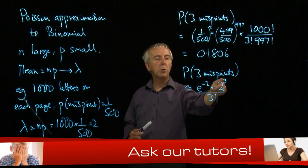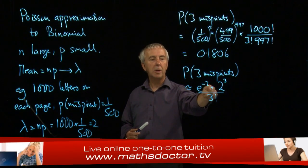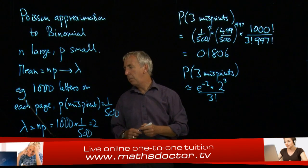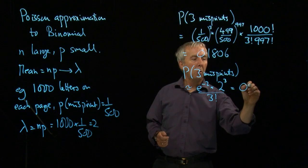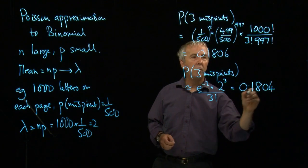Most of it we can do in our heads. 2 cubed is 8, 3 factorial is 6. We just need to look up the e to the minus 2. And if we work it out, we get 0.1804.